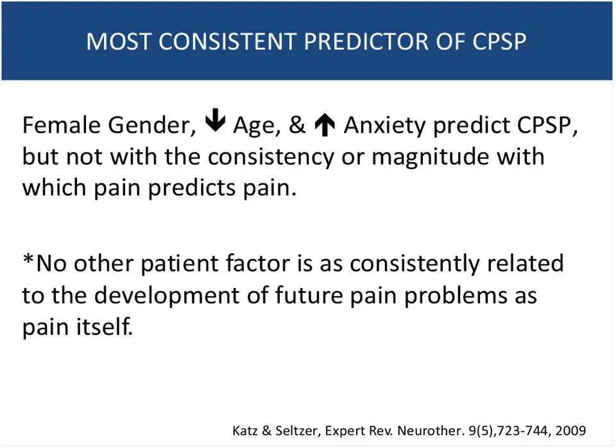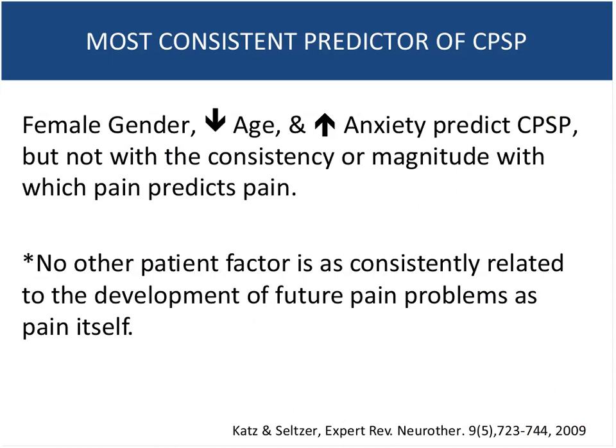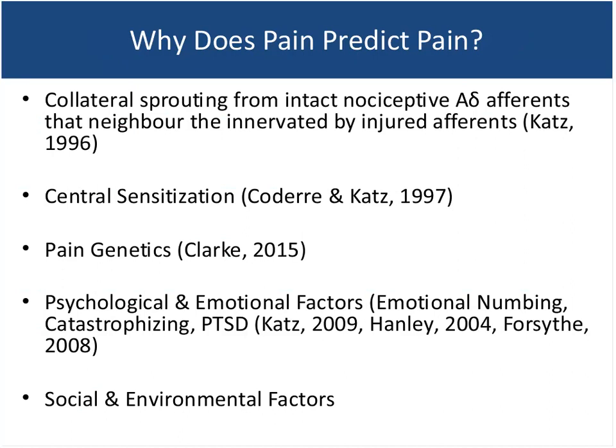Interestingly, no other patient factor has been as consistently related causally to development of a pain problem as pain itself. Why does pain predict pain? After an injury, intact nociceptive A-delta afferents trying to re-innervate may go awry — once injured they sprout and continue to have an ectopic focus delivering an abnormal signal to the brain. We know that central sensitization has been established for decades through multiple hits. Possible genetics predispose individuals to developing pain, and we now know that psychosocial, social, and environmental drivers also play a significant role.